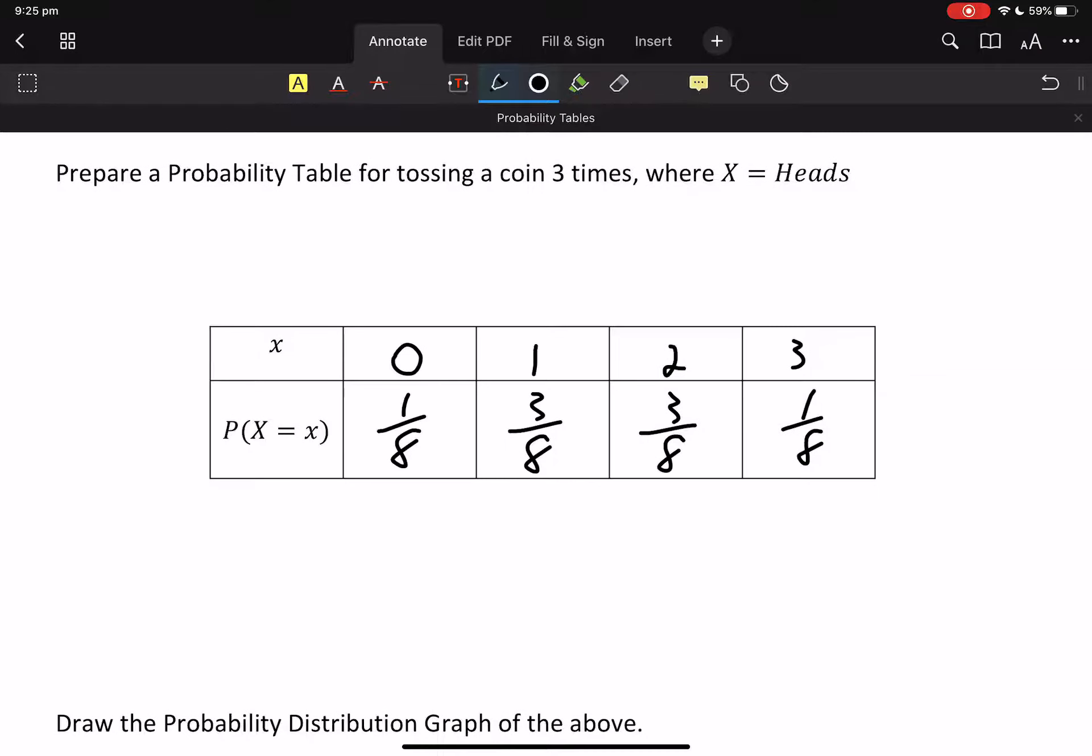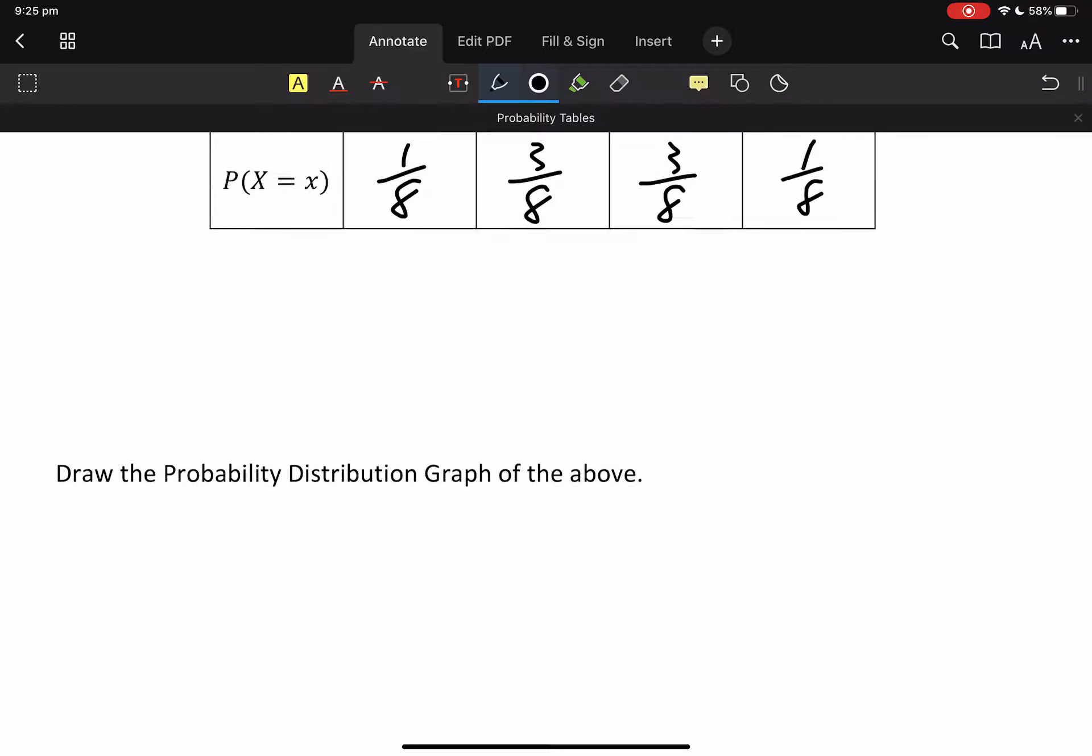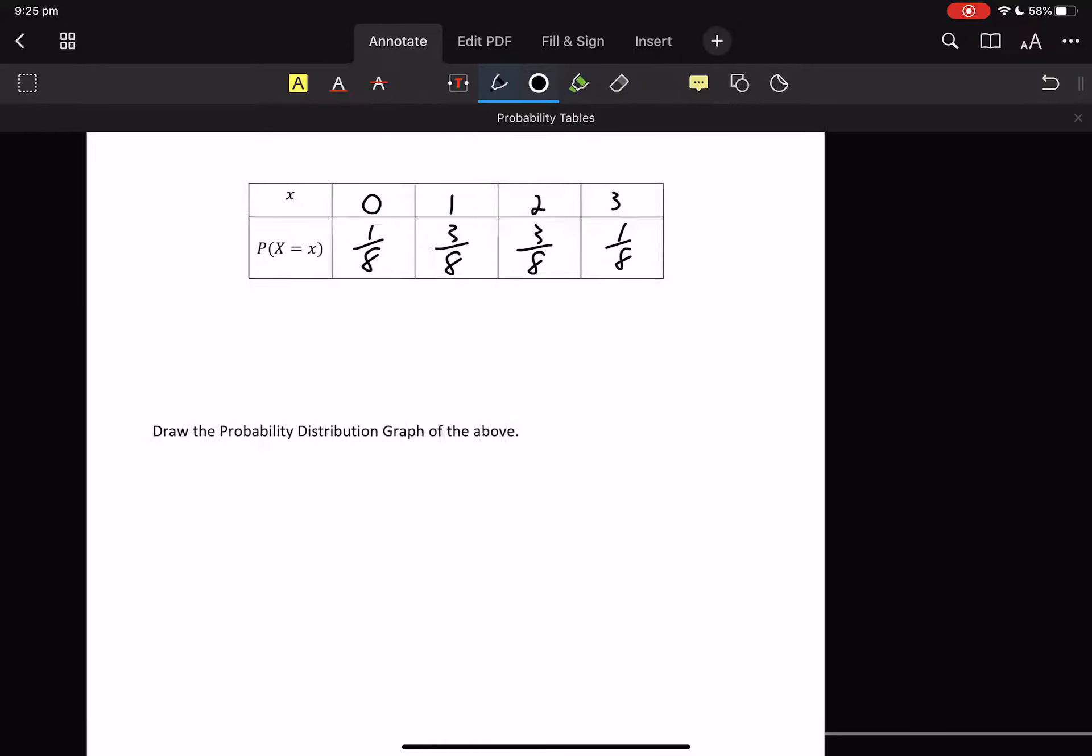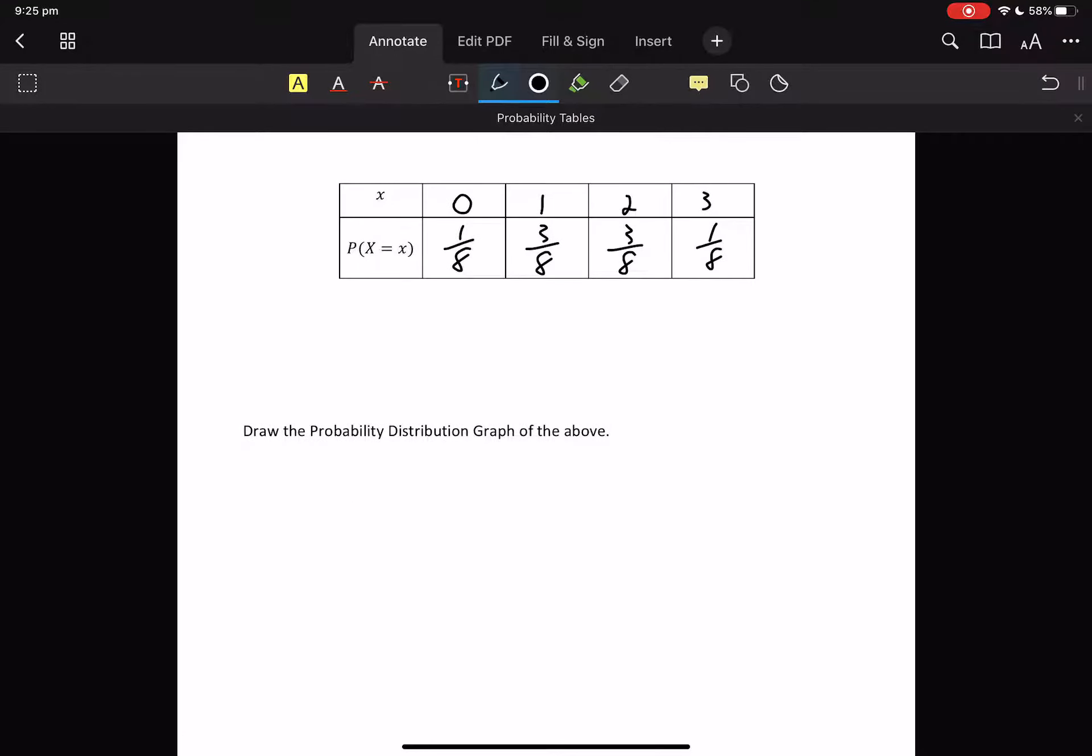So there is our probability table. It's pretty basic isn't it? It's just a table of the probabilities. Let's do a probability distribution graph of the above. So, all we're going to do, you're probably going to use a ruler. So, what we're going to do here is, this is my X and this is my P of X equals X and I can have 0, 1, 2 or 3 because that's what small X can be.